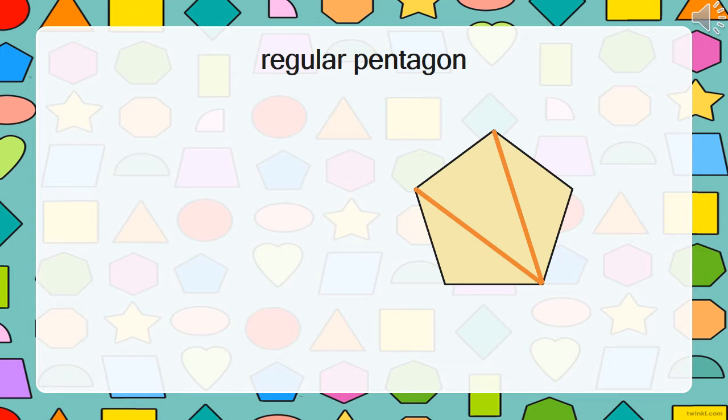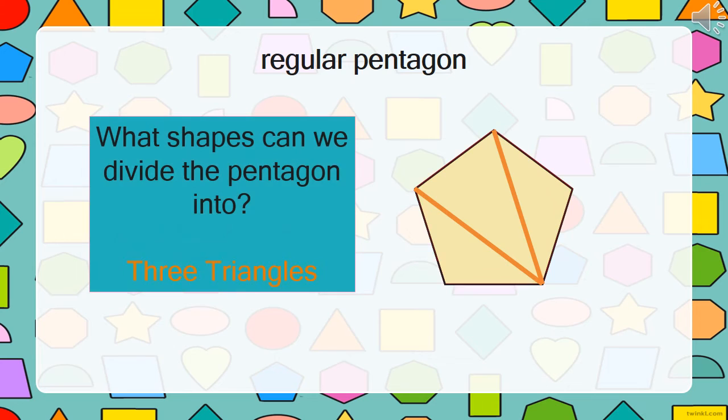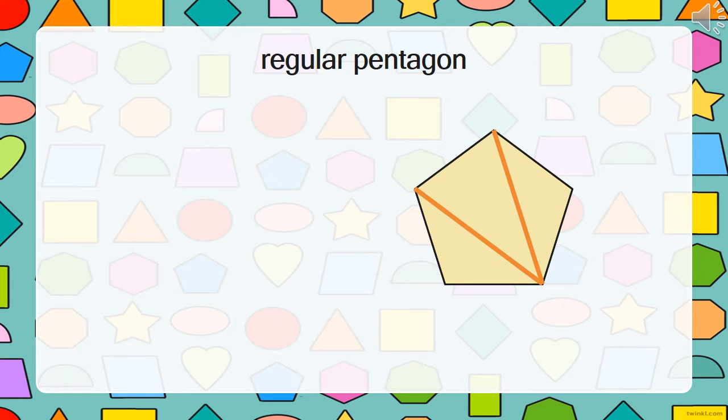We can break this regular pentagon into three triangles and we can use this knowledge to find out the total of the angles of a pentagon. Now the total of the angles for a triangle is 180 degrees. We can fit three triangles into the pentagon, so that means the total angles for a pentagon is three times 180. So the sum of all the angles in a pentagon is 540 degrees.